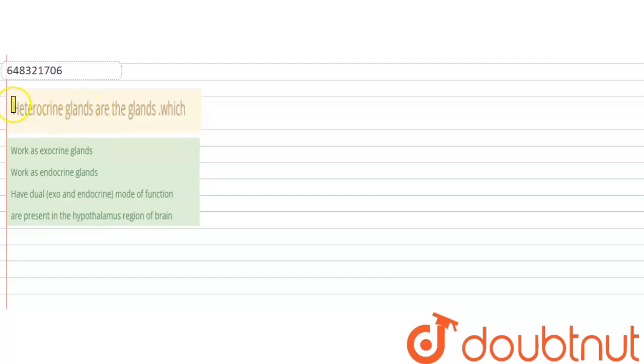Hello everyone, let's take a look at the question. The question says that heterocrine glands are the glands which... Okay, so here they are talking about a gland known as heterocrine glands.